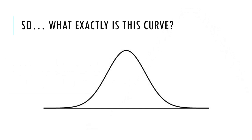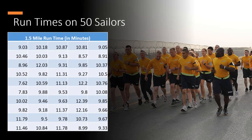What exactly is this curve? You may have seen it before and recognize that it is the normal distribution curve, or maybe you've seen it called the bell curve. To help illustrate the normal distribution curve, I'm going to use this example dataset of 1.5 mile run times for 50 sailors in the U.S. Navy. To be clear, this is not real data — I'm using a normal distribution random number generator to create this data. Looking at this table, we can see that most of the sailors run about 9 or 10 minute 1.5 miles, which is really good.